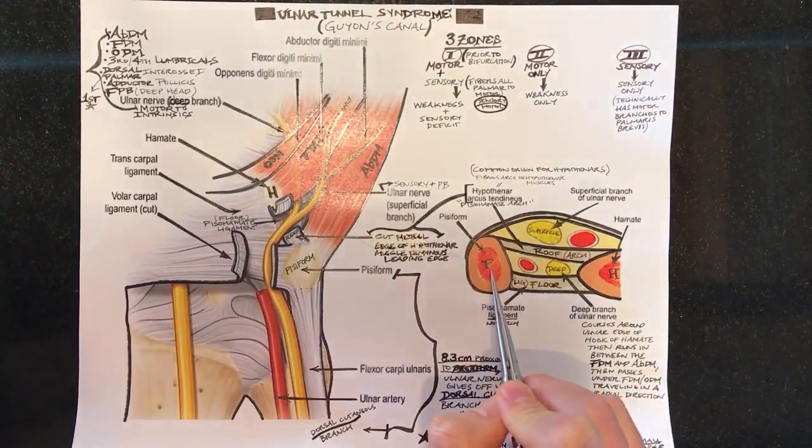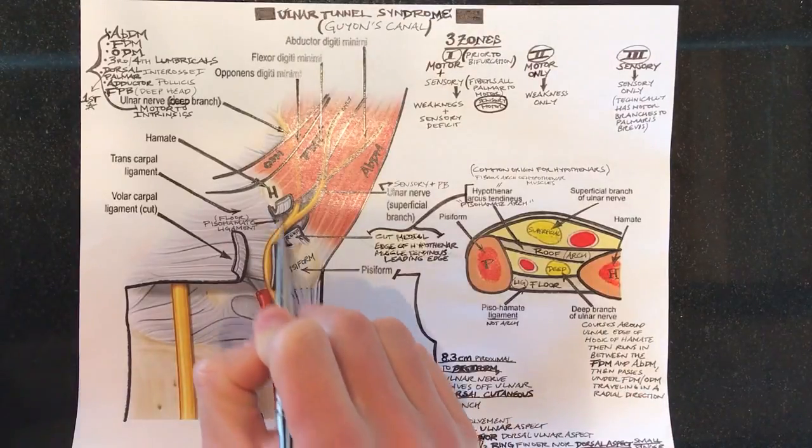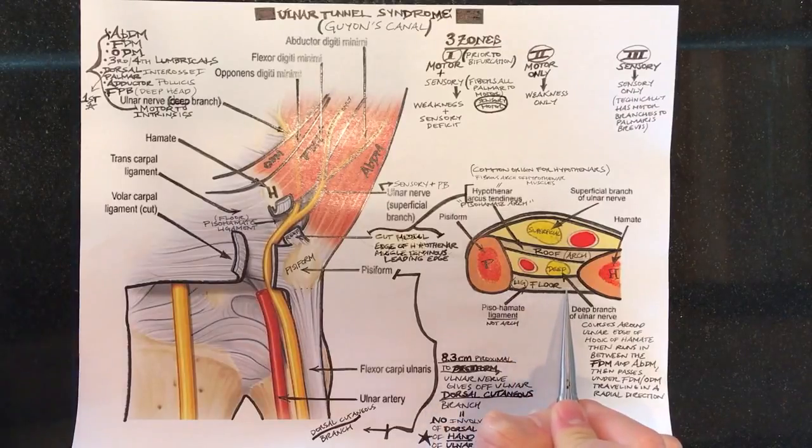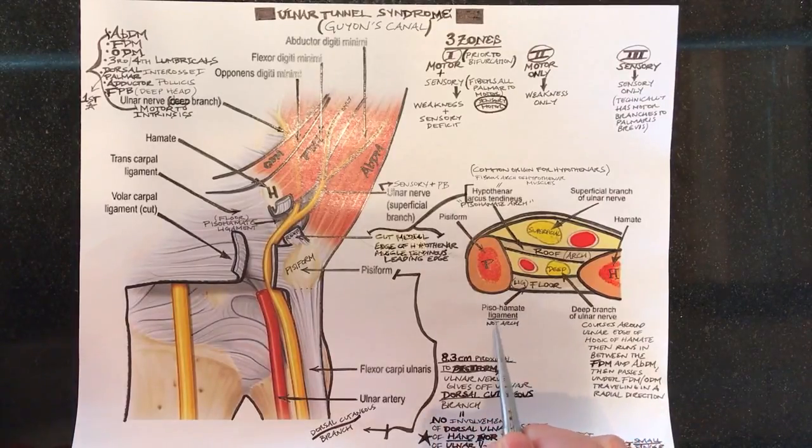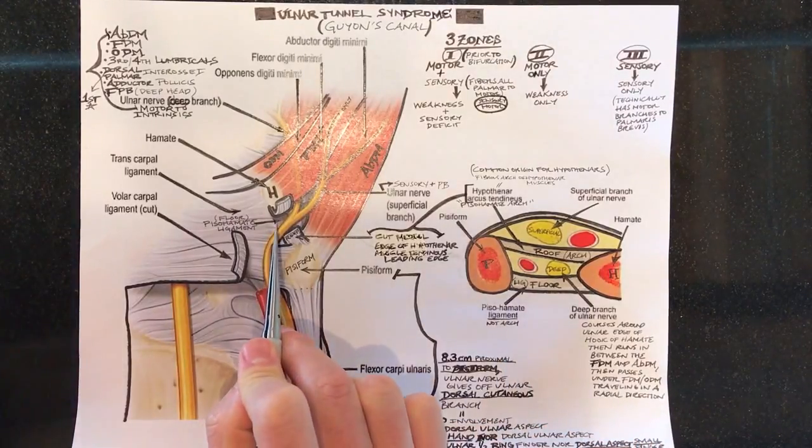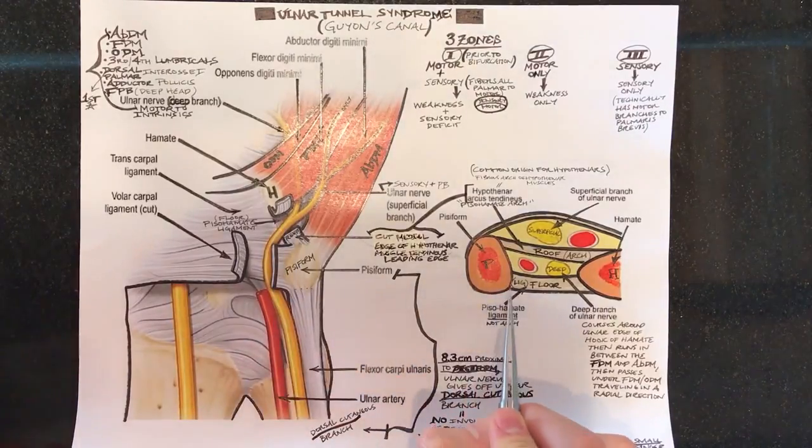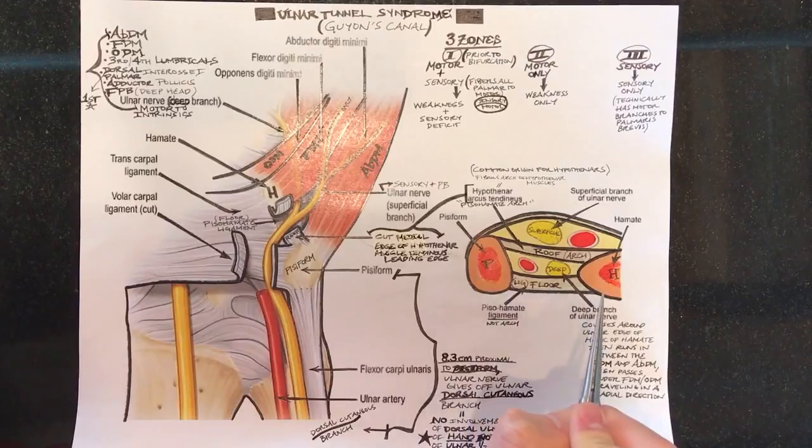In between the pisiform and the hamate as you can see here there's two different structures that are important. The floor is formed by the pisohamate ligament. So here the floor you can see here how the nerve is running on top of it. That is a ligament that spans between the pisiform and the hamate.